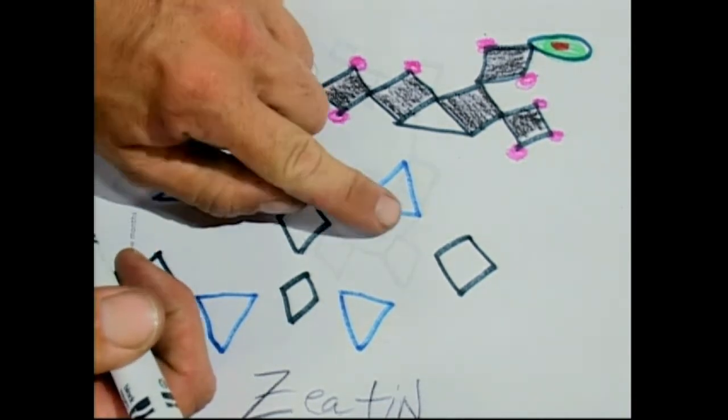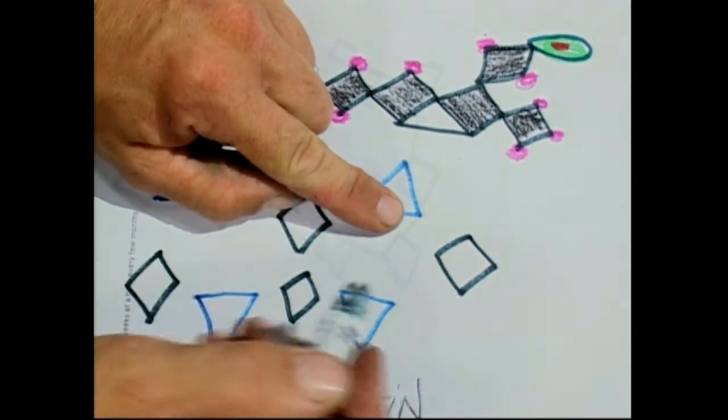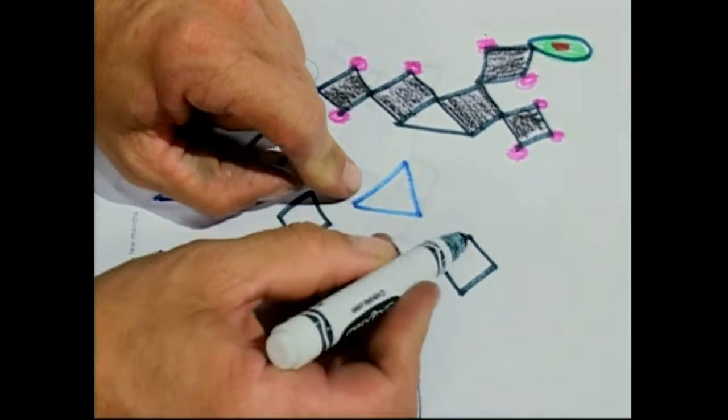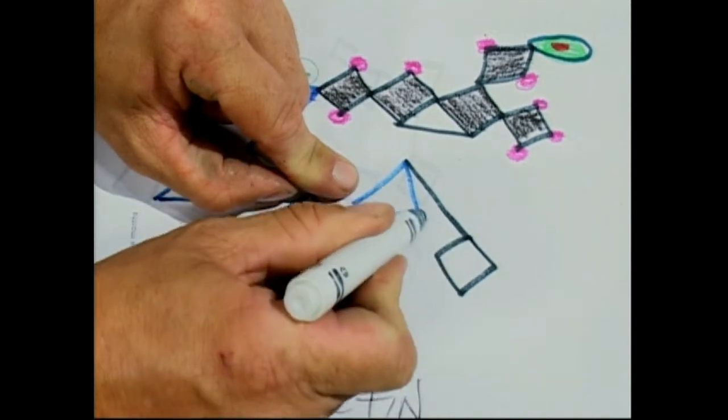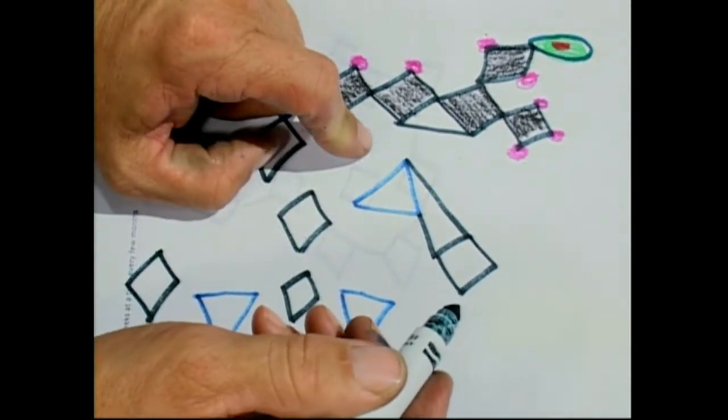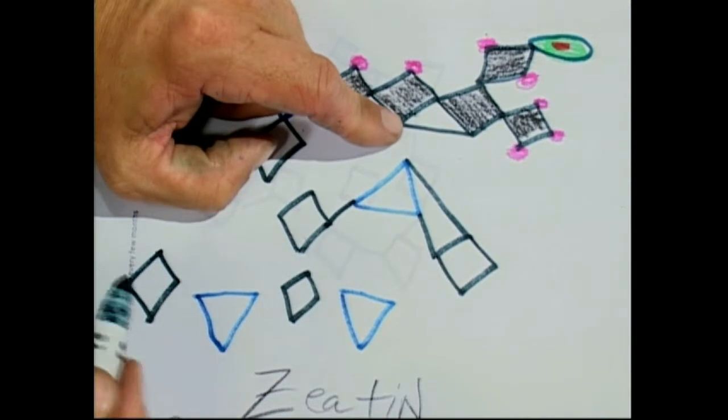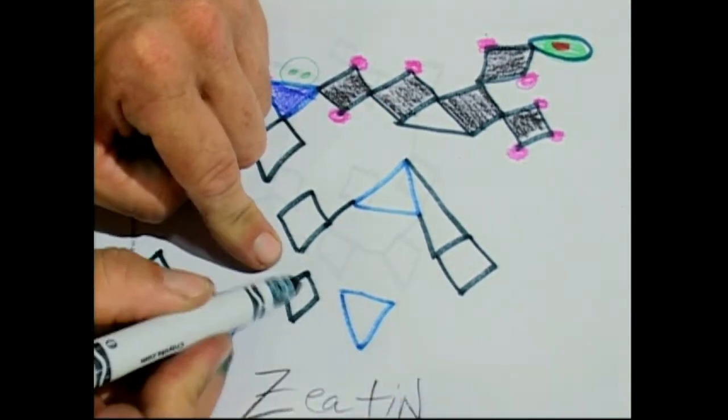But we're experts. What do we see? We see a double bond on this nitrogen. So what's the best way to draw that? Probably this one. The third bond has to go there.